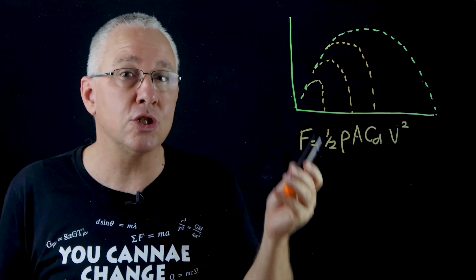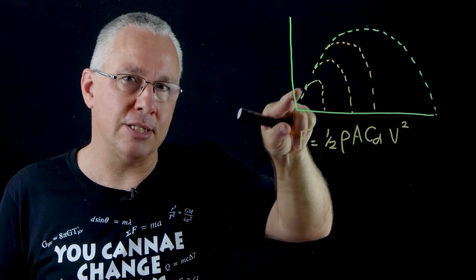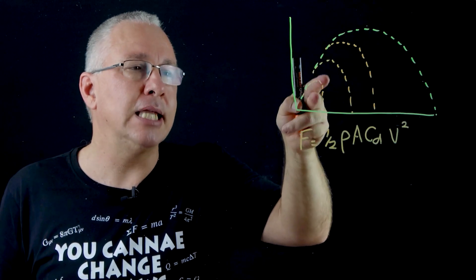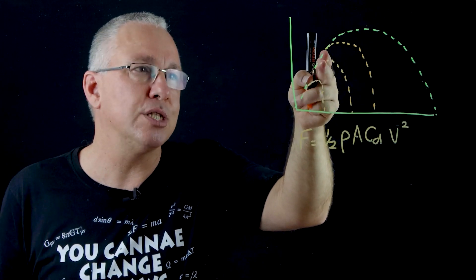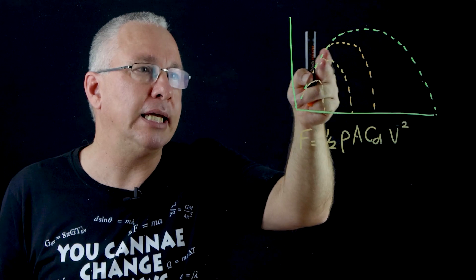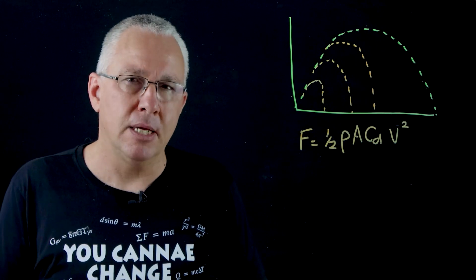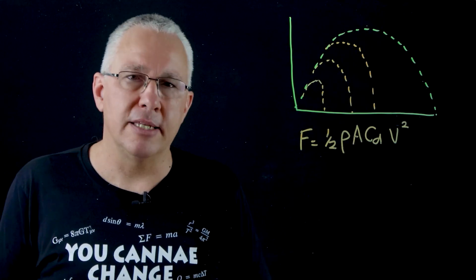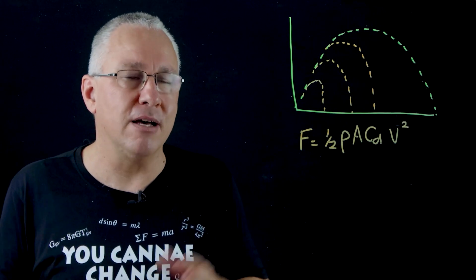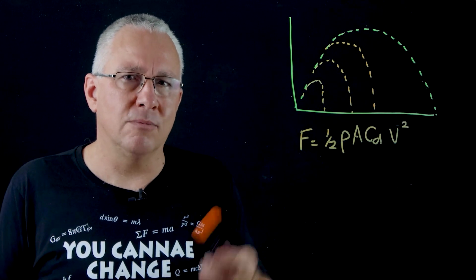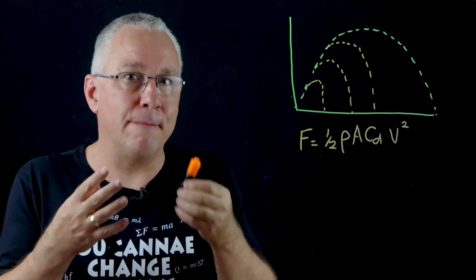The v² term means the faster the object moves, the more drag it experiences — a squared relationship — so there's a lot more drag in the early parts of the flight. Once the object slows in the forward direction, drag drops off, and then it essentially falls straight down under gravity alone. The remaining term, C_d, is the coefficient of drag — something of a fudge factor.